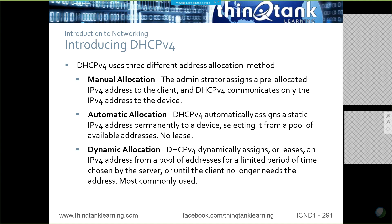With dynamic allocation, DHCP dynamically assigns an address — a lease — for a period of time from an address pool, which is generally called a DHCP address scope. The lease is for a limited period of time chosen by the server, until the client no longer needs the address. If the client's lease time expires, the client can renew that address by going back to the server and requesting a renewal.